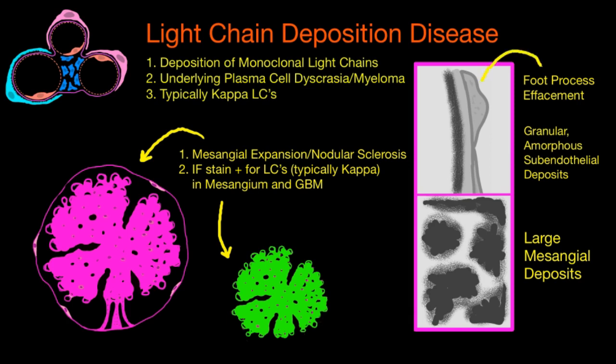Under electron microscopy in LCDD, the podocytes are effaced — injured and unable to regain their correct structure. Underneath, you'll see granular amorphous deposits in the subendothelial location — beneath the basement membrane, with the podocytes on top. This is the deposition of the light chains, forming a granular, pepper-like material. Inside the mesangium, you would see large aggregates of deposits with granular amorphous material. Immunofluorescence is used to determine exactly what kind of light chain is accumulating.